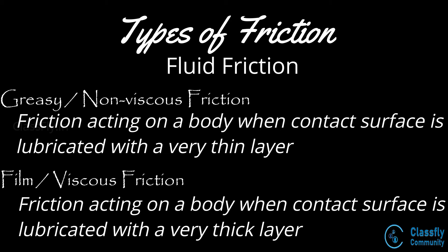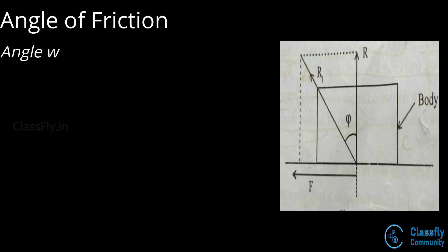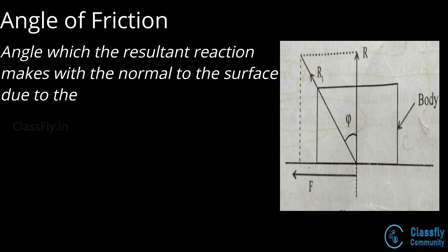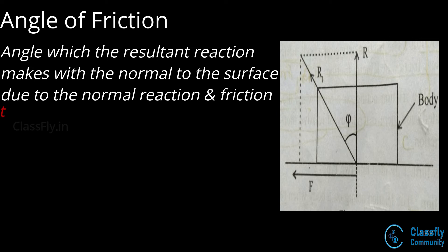Angle of friction: this is the angle which the resultant reaction — due to the normal reaction and frictional force — makes with the normal to the surface. Hence the angle of friction is given by tan φ = F / R, where F is the frictional force and R is the normal reaction.